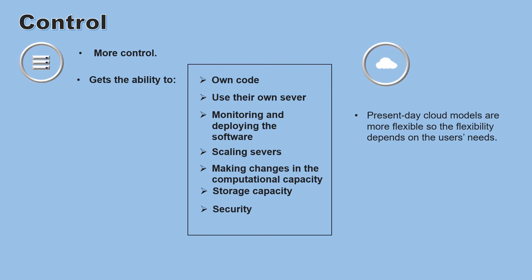Users have more flexibility in the on-premise model than the cloud model in some respects, though present-day cloud models are increasingly flexible — so flexibility depends on the user's needs. A drawback of on-premise when considering flexibility is that the user has to update their own software and stay current with the market on their own.